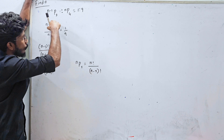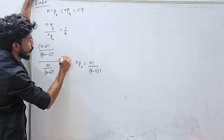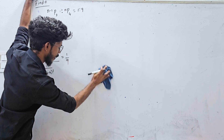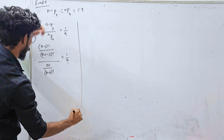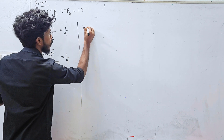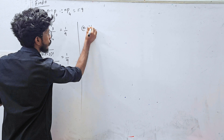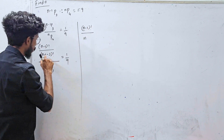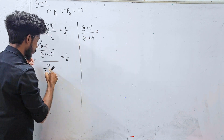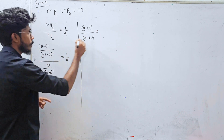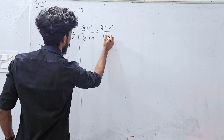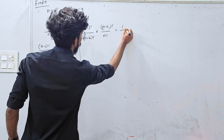Now the NPR formula is set equal to 1 by 9. So we have n-1 factorial divided by n-1 minus 4 factorial, into n minus 4 factorial divided by n factorial, is equal to 1 by 9.